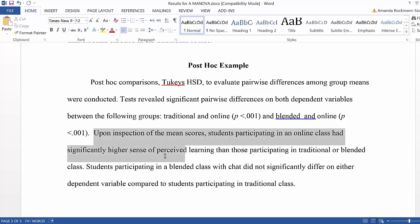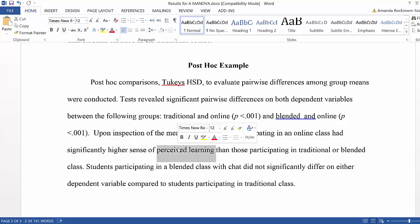So it says upon inspection of the means, students participating in the online class had significantly higher perceived learning. Here I have perceived learning instead of community, but it could be any dependent variable. But this just provides you with an example. If you were using post-hoc tests,